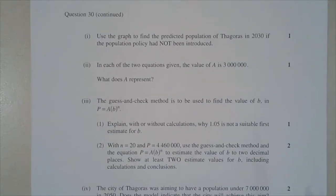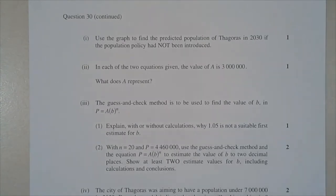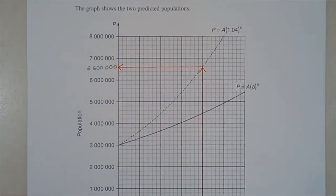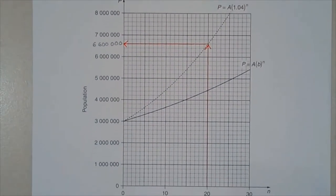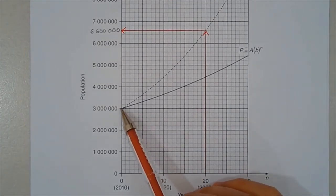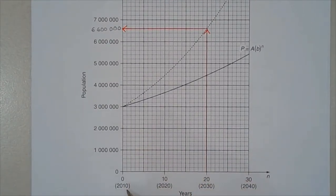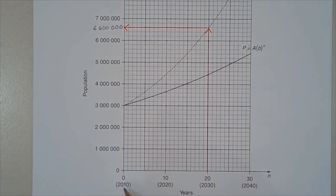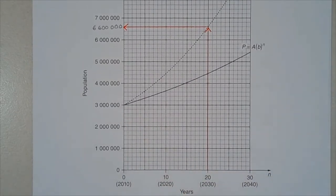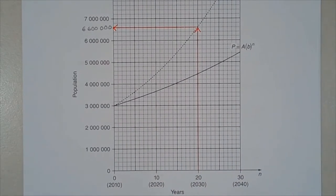Part two: in each of the two equations, the value of a is 3 million. What does a represent? Locate 3 million on the y-axis and notice it corresponds to the year 2010. So a represents the initial population of Thagoras.